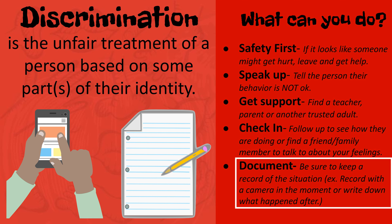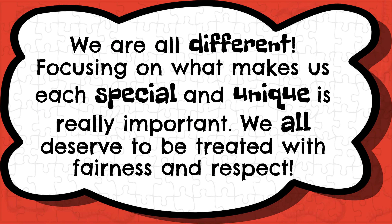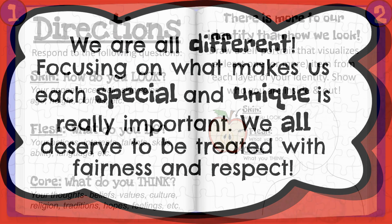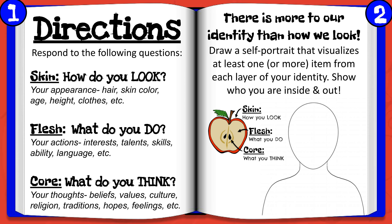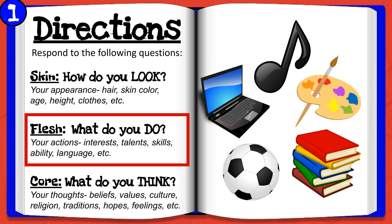Here are some tips of what you can do. Keep in mind that safety always comes first. If it looks like someone might get hurt, leave and get help right away. Speak up — tell the person that their behavior is not okay. Be sure to get support; find a teacher, parent, or another trusted adult. Remember to check in after. If it was someone else who is being targeted, be sure to ask them how they're doing. If it was directed at you, be sure to find a friend or family member to talk to about your feelings. It's also important to document if you can — keep a record of the situation, either through a camera in the moment or by writing down what happened after. Recuerda that there is power in your voice and actions. Everyone can say and do something to help.